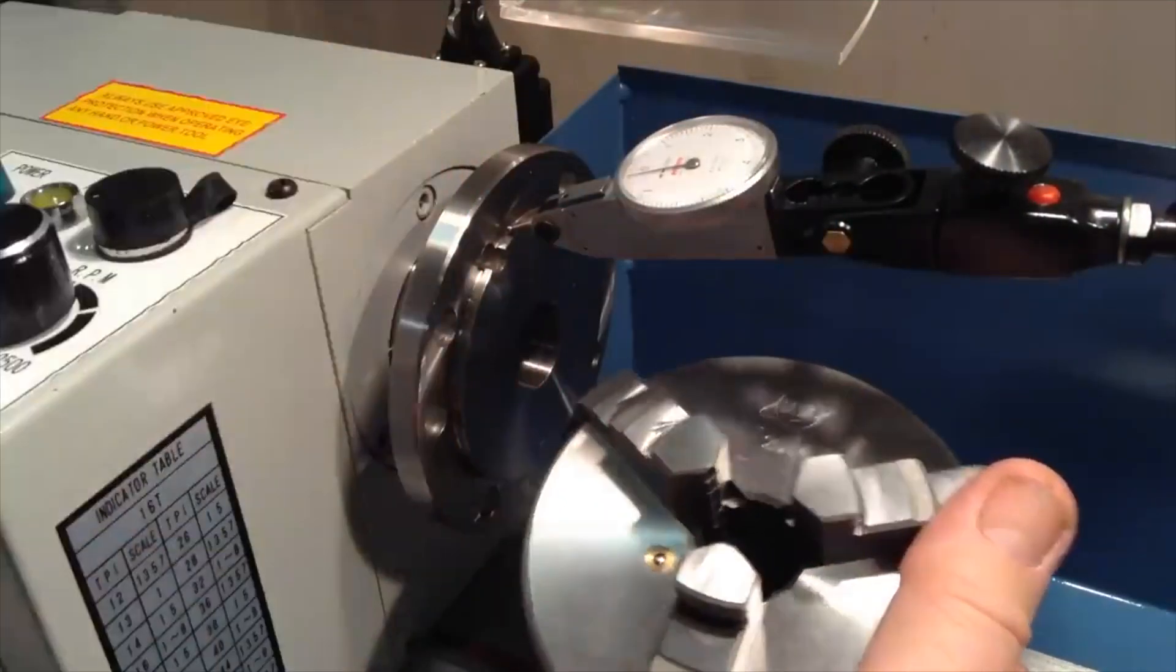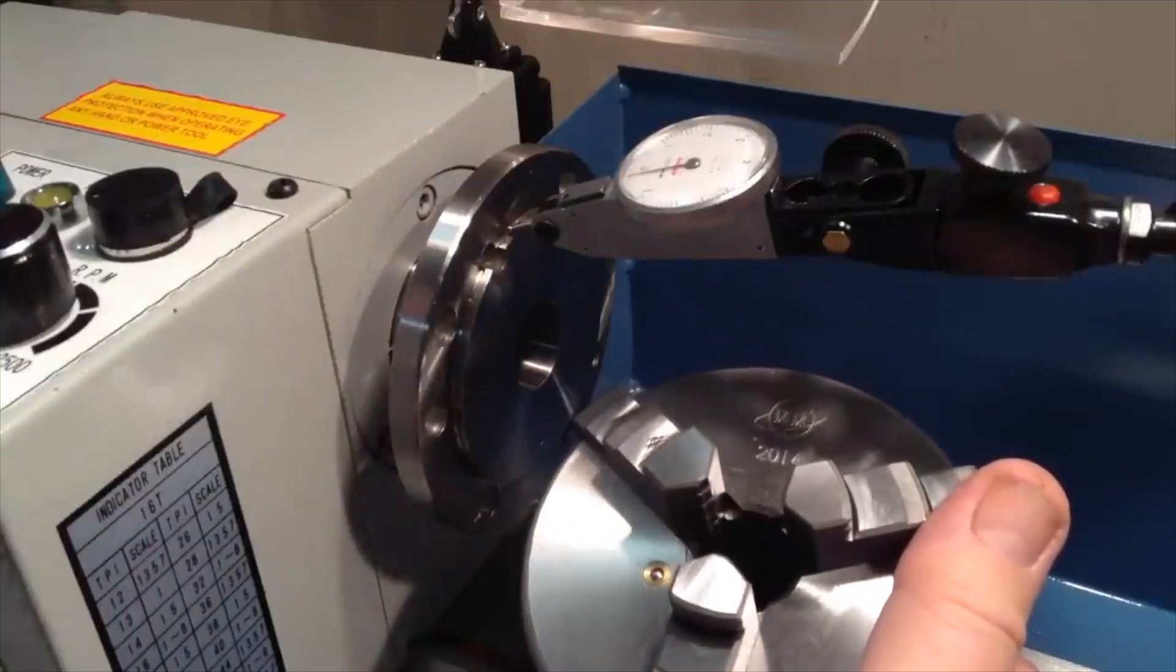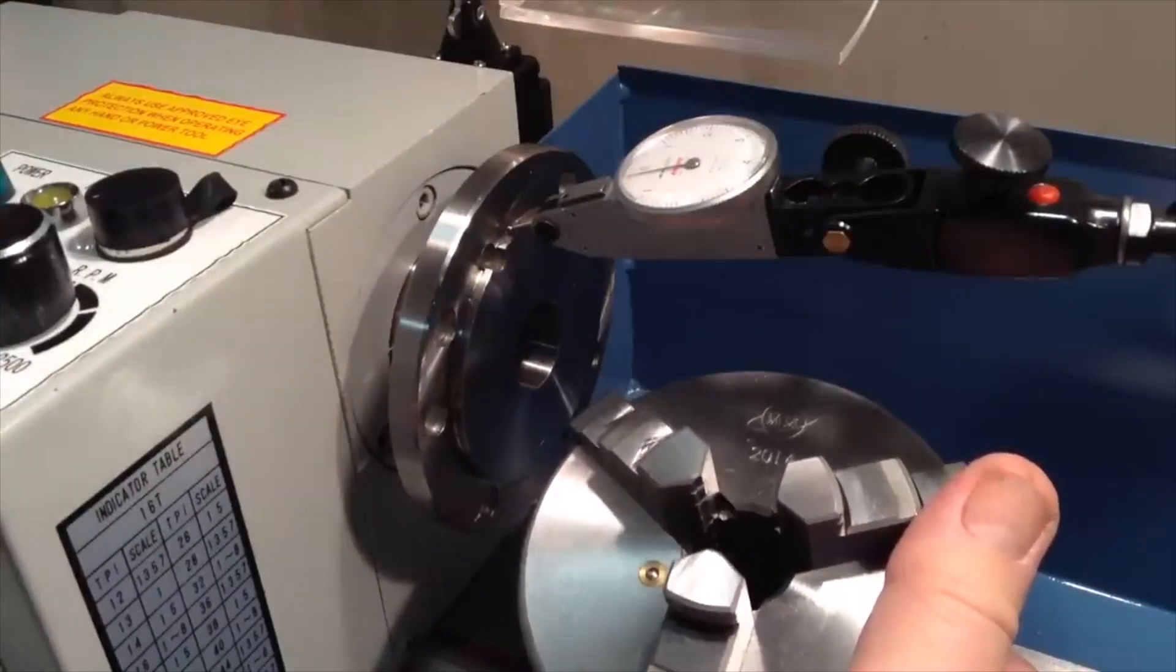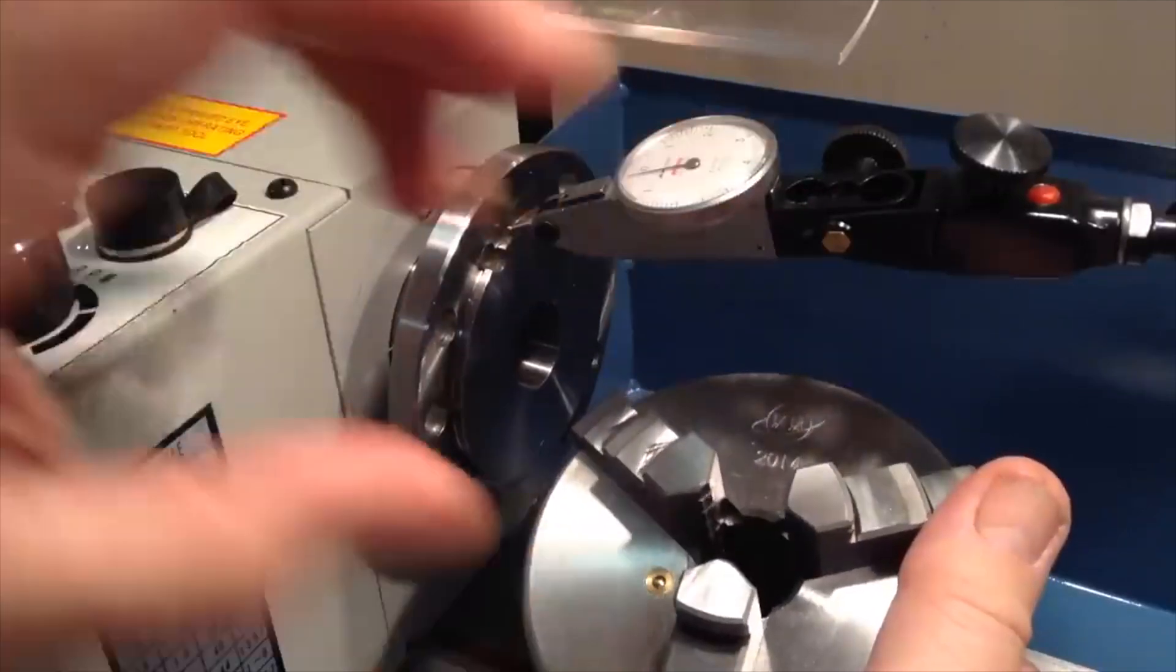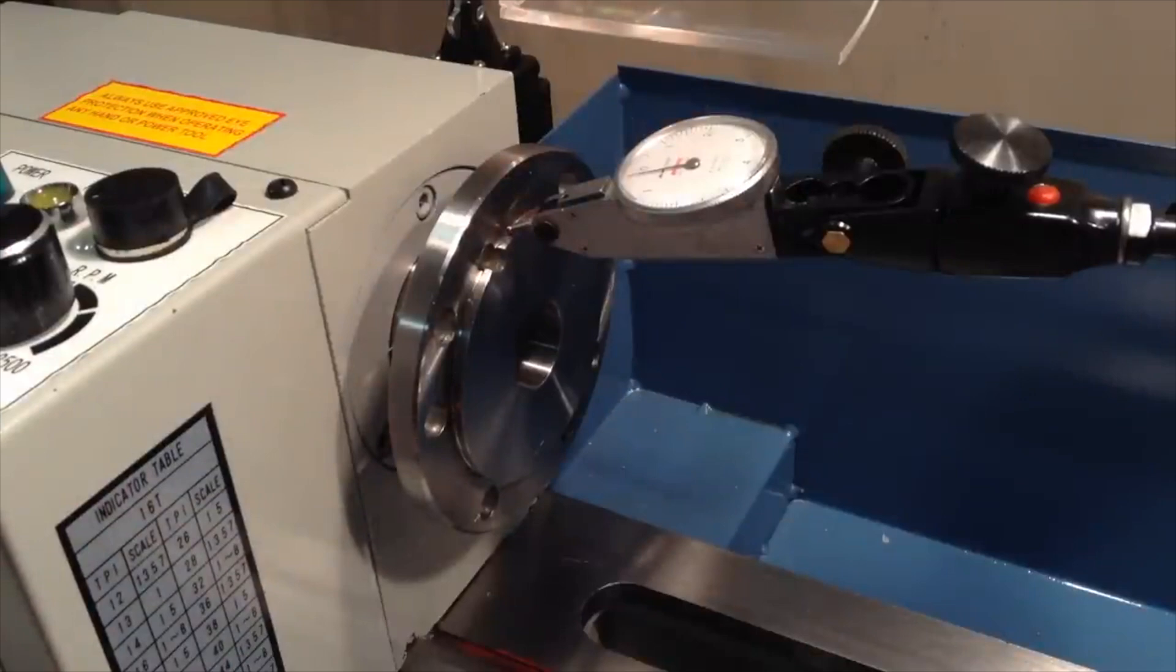So on this lathe even if the chuck was a little bit off you'd still get concentricity on the order of a few ten thousandths once you make your first cut. We'll explain that later when we get into turning operations. Overall that looks pretty good, certainly well within the expectations on an inexpensive lathe like this.